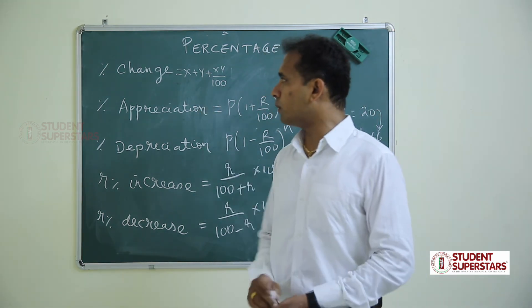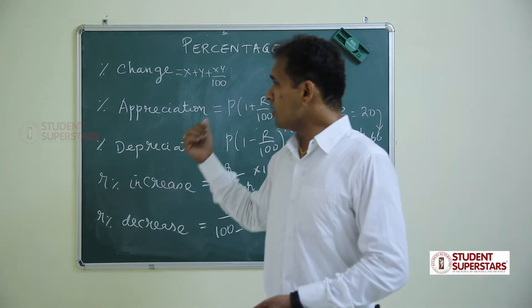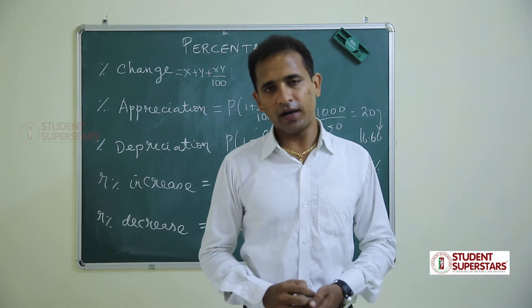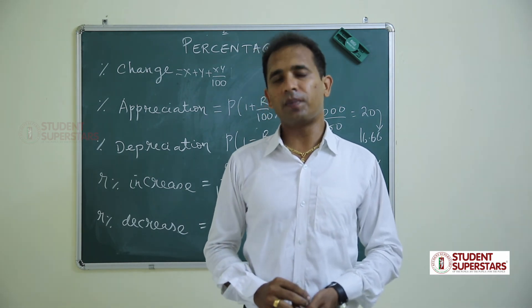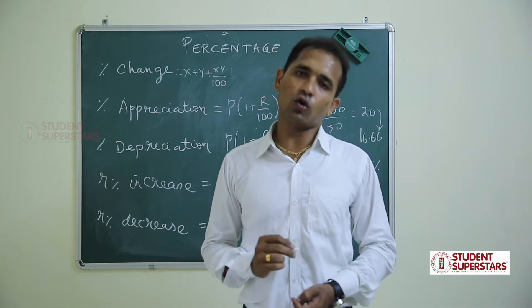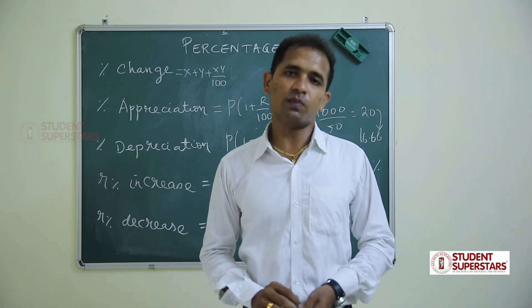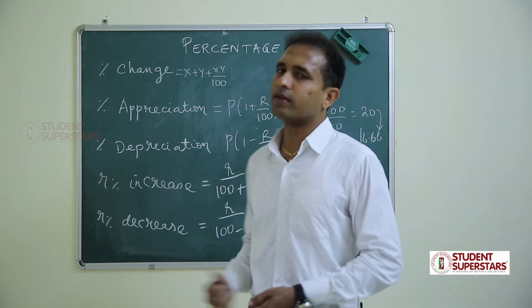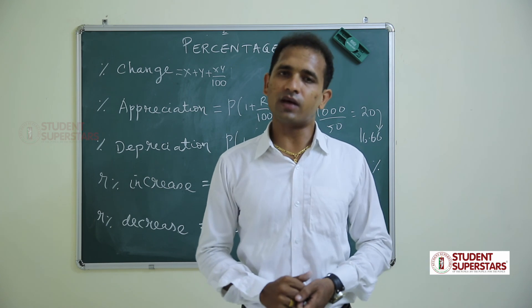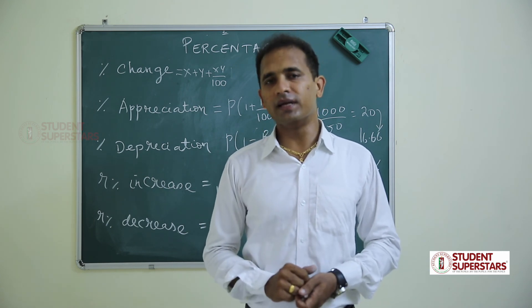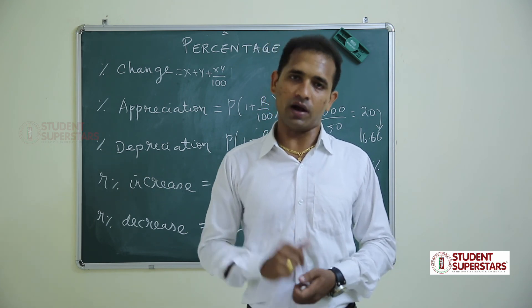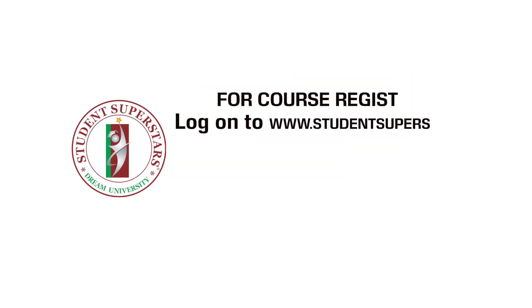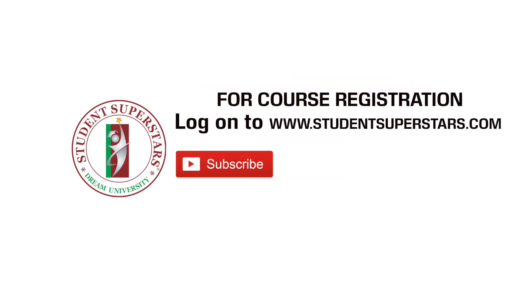To summarize, remember all these formulas: percentage change = x + y + xy/100; percentage appreciation = P × (1 + r/100)^n; percentage depreciation = P × (1 − r/100)^n; r percent increase in price → r/(100 + r) × 100 decrease in consumption; r percent decrease in price → r/(100 − r) × 100 increase in consumption.